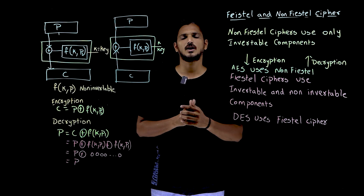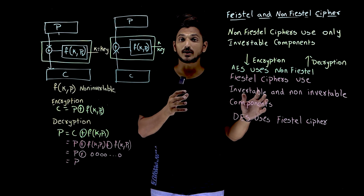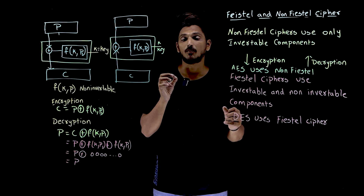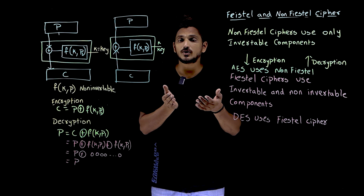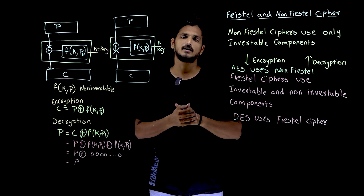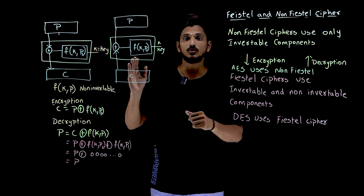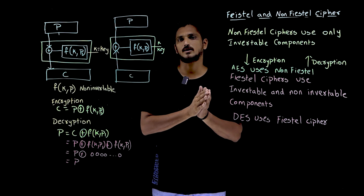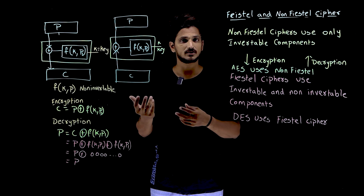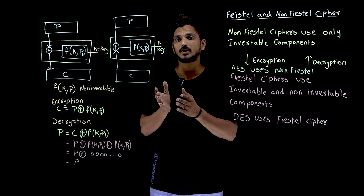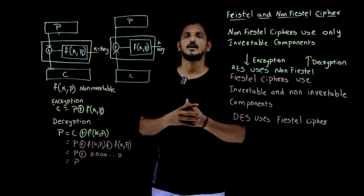All these are continuation classes. Here we are going to use non-invertible components. Using non-invertible components, how are you going to get the plaintext back? Here we are going to use the concept of XOR. Using one of the properties of XOR which we discussed in our previous classes, we are going to use non-invertible components in our Feistel ciphers.